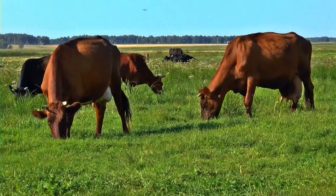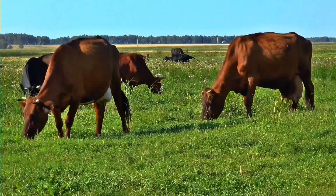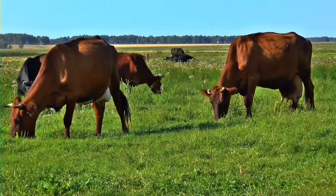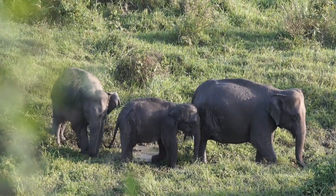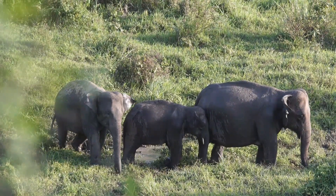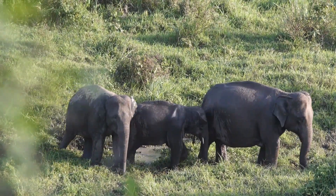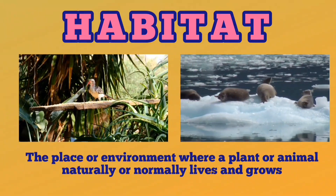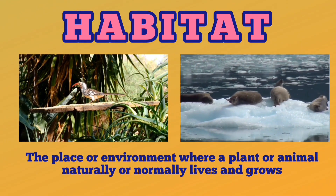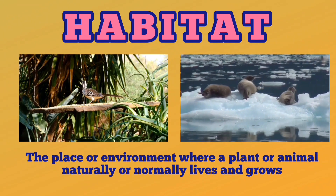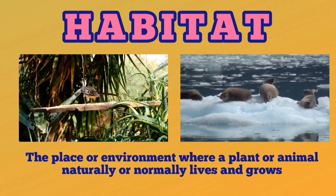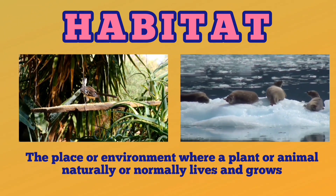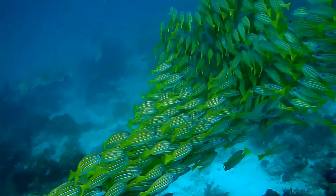Living beings are everywhere. Life exists in both extremely hot and extremely cold regions. The place or surrounding where a plant or animal lives is called its habitat. A habitat provides food, water, air, light, shelter, and a place for breeding to all the plants and animals living in it.